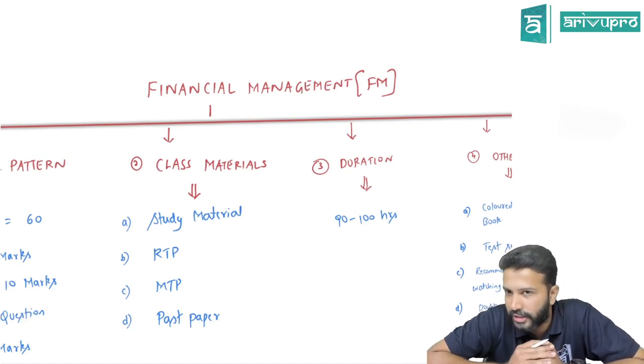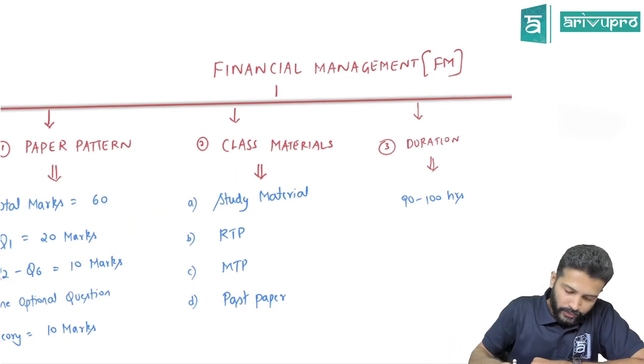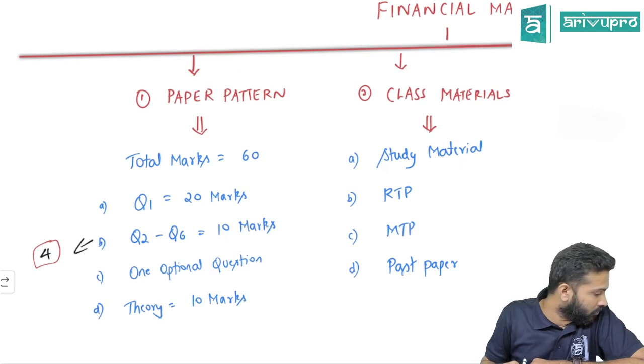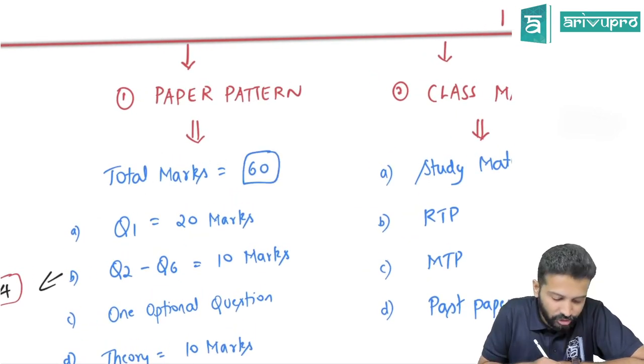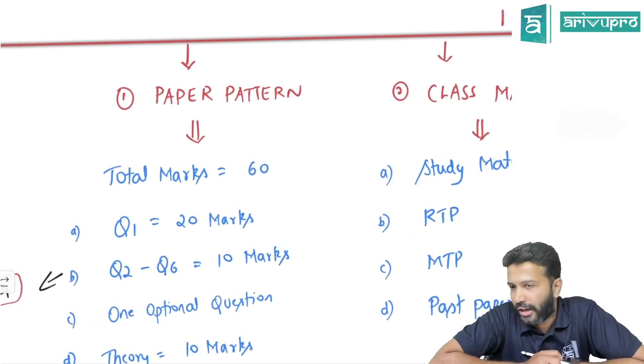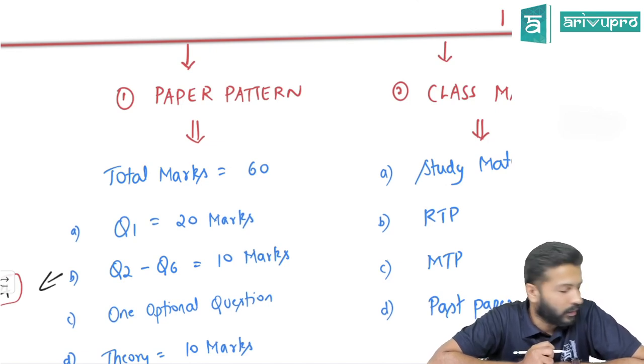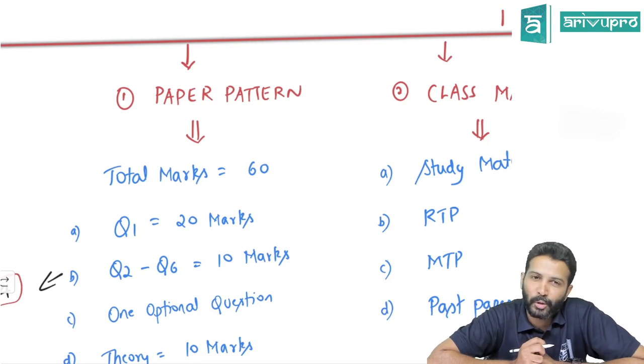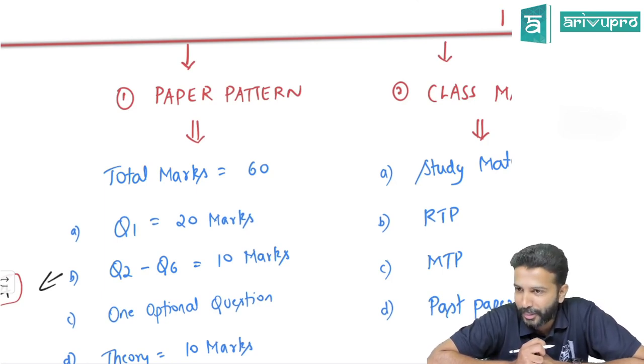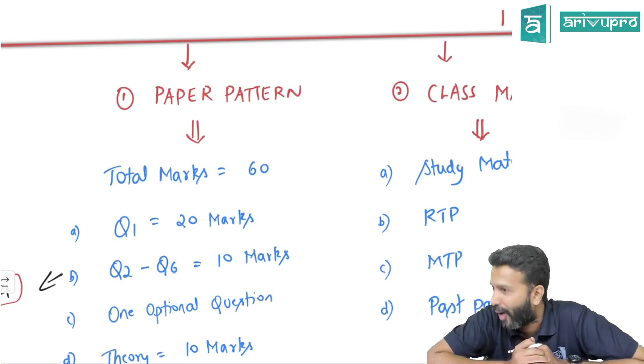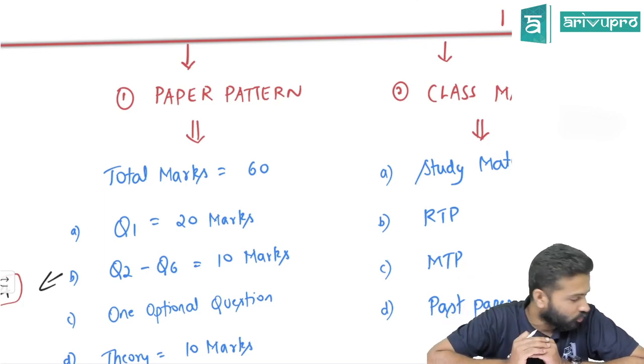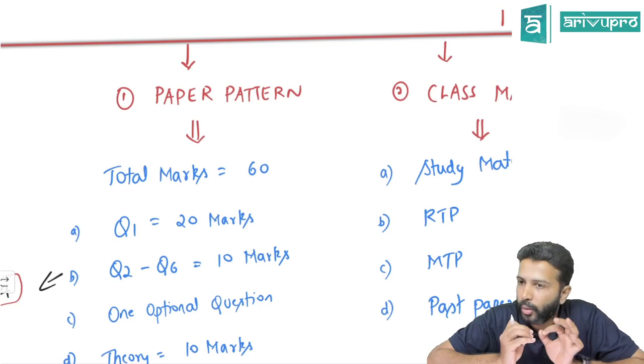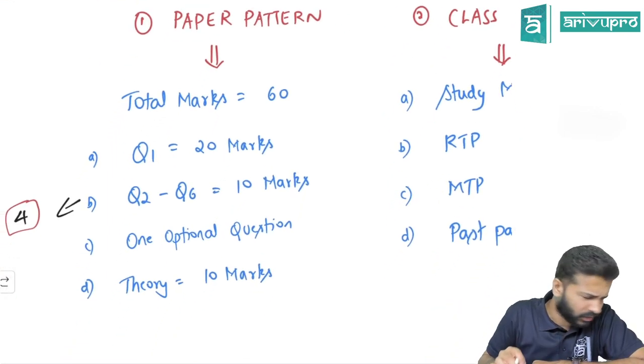First is the paper pattern. FM is a paper which carries only 60 marks, meaning it's not a full-fledged paper. Currently it is FM plus Economics, but proposed to be FM plus Strategic Management as per the new syllabus. Either way, FM is for around 60 marks.